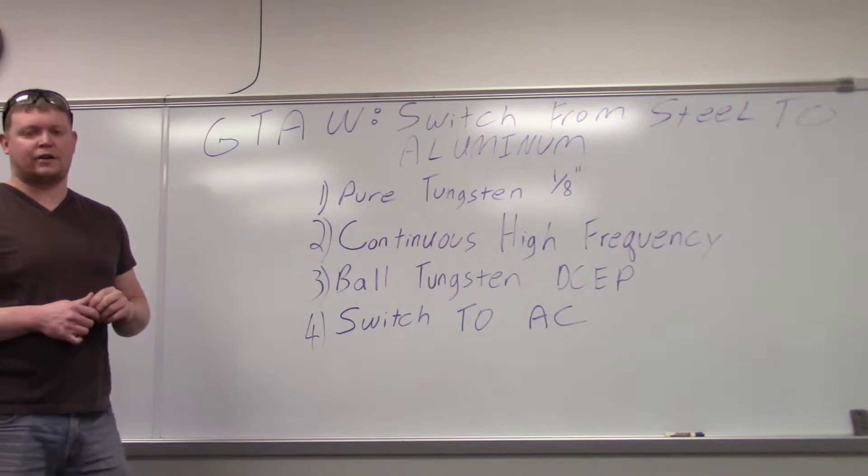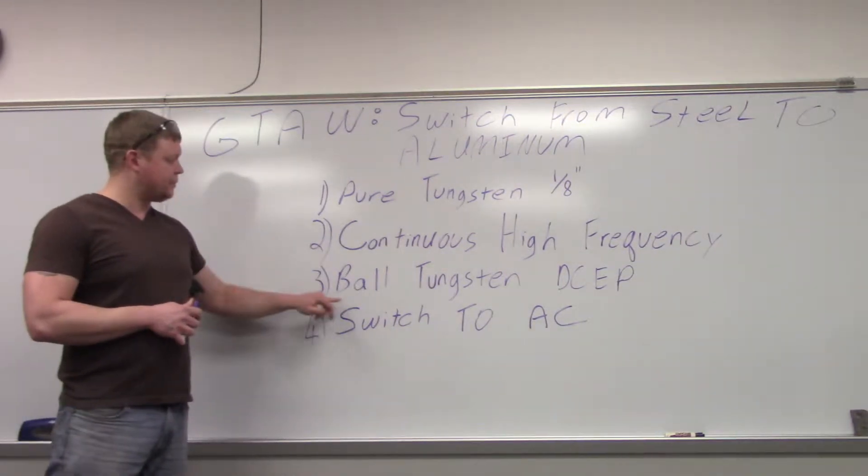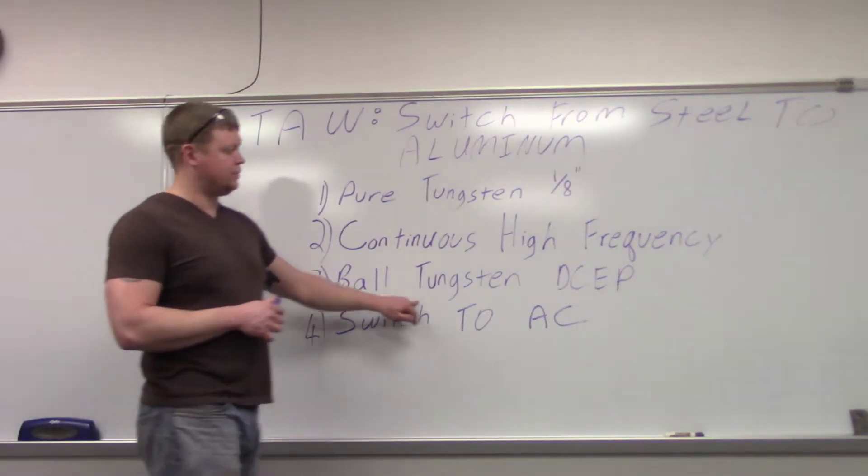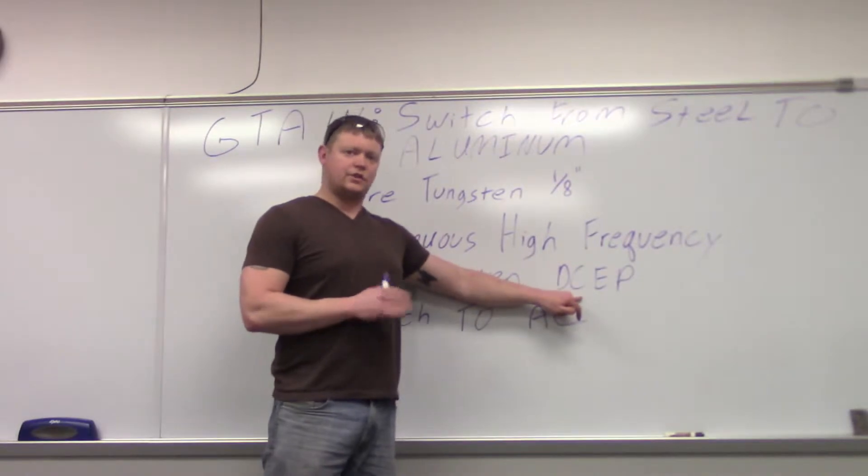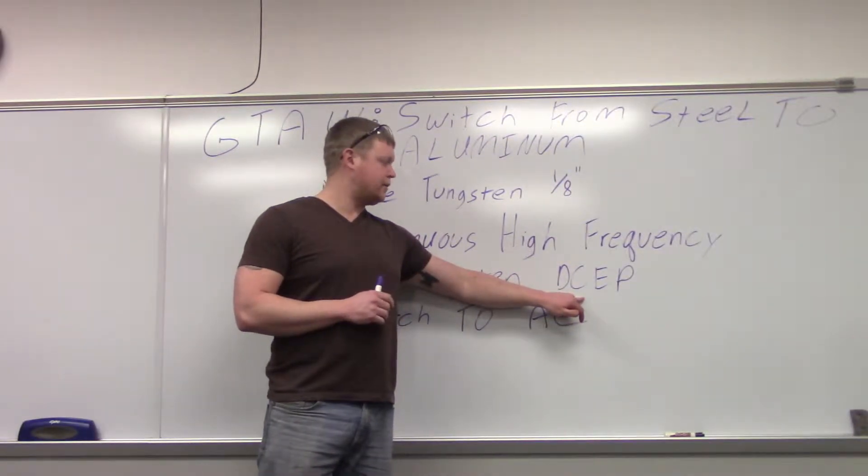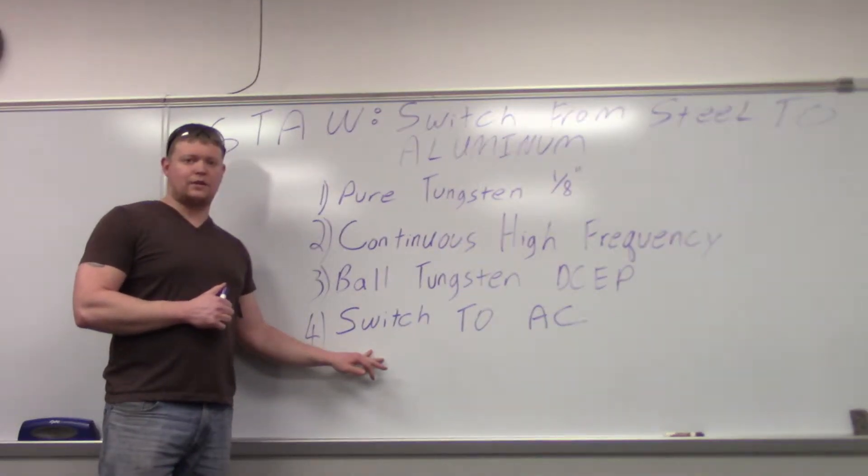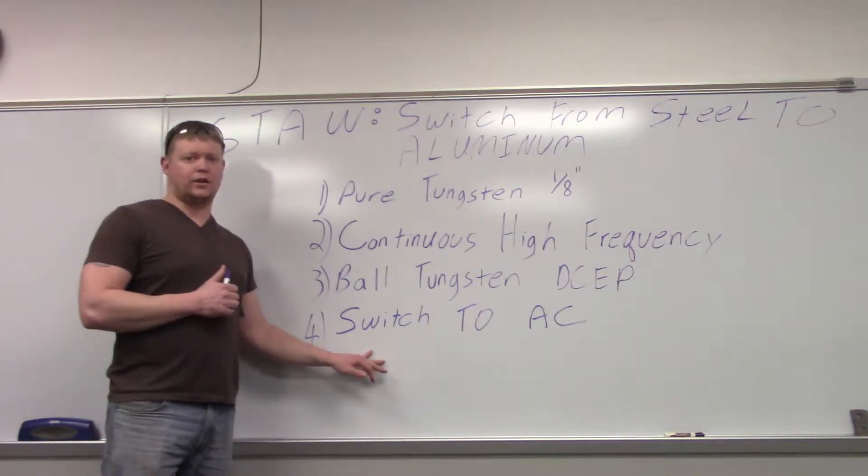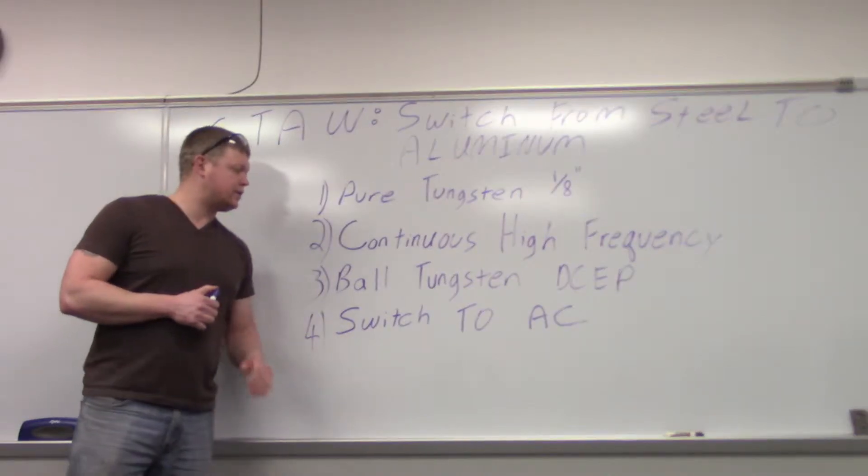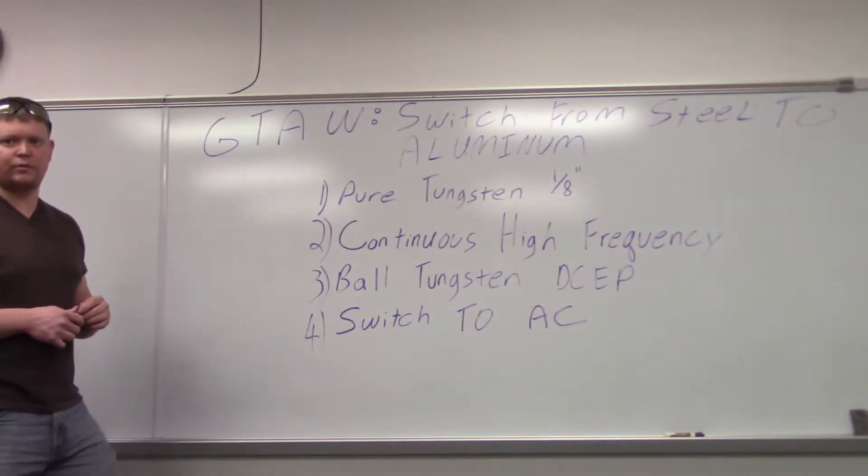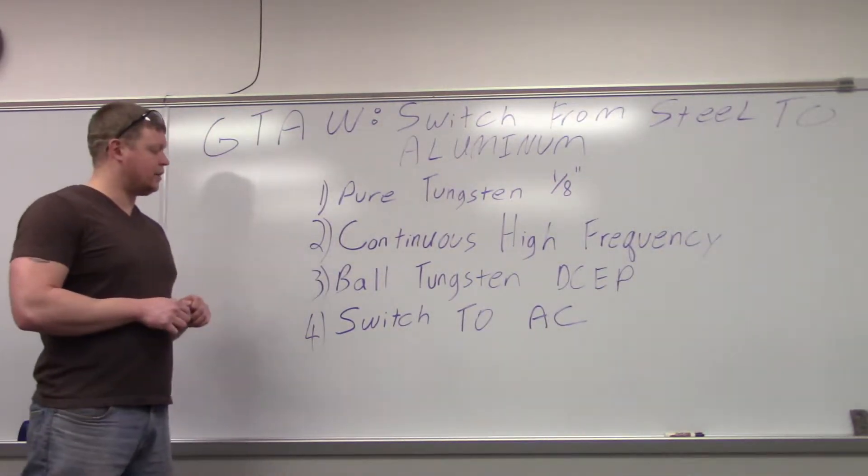To ball your tungsten up, you're not going to use a point. You need to go to direct current electrode positive. Just feather the pedal and it'll ball up your tungsten. Then you're going to switch back to AC and do all your welding on alternating current. It provides cathodic cleaning for the aluminum.